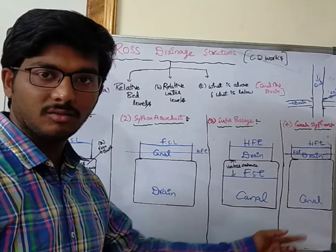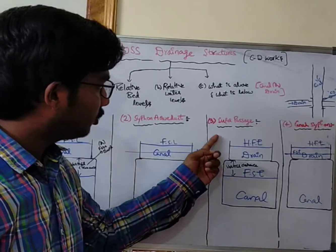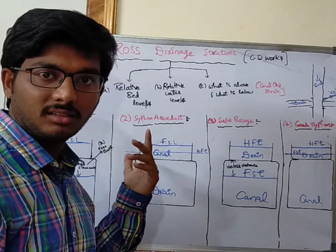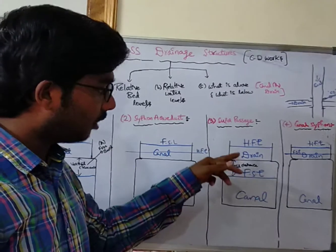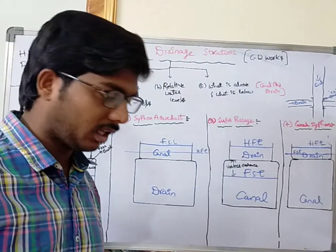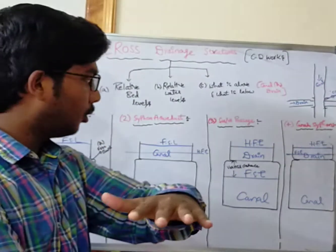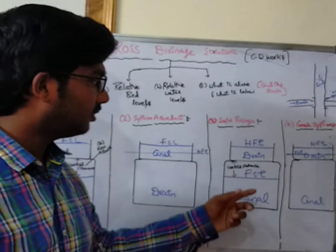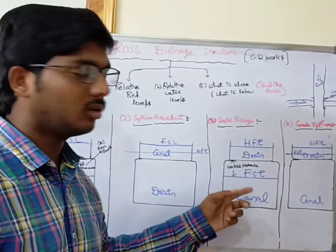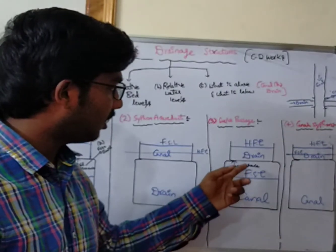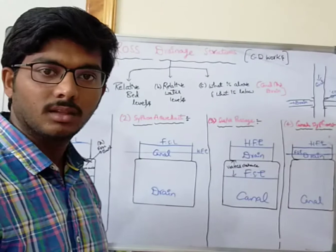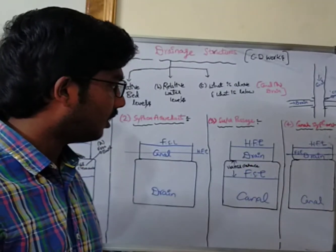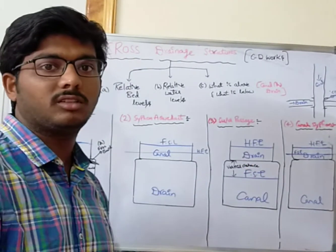In a Super Passage, it is the opposite of the Aqueducts — the drain is flowing above and the canal is flowing below. In Super Passage, there is a vertical clearance or freeboard between the Full Supply Level of the canal and the drain bed level, so both the drain and canal are subjected to atmospheric pressure.